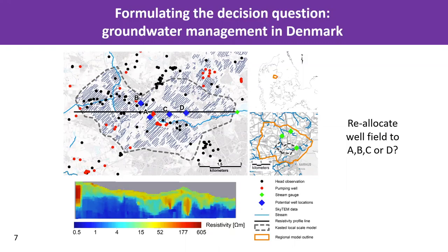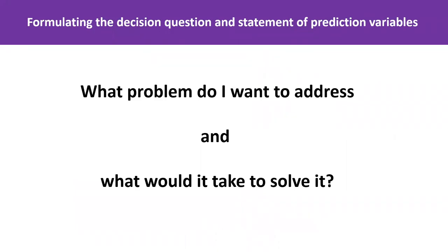We have a number of observations, which is typical in groundwater — pumping wells or observation wells where we measure the groundwater level. At the bottom, you see the SkyTEM resistivity data, which indicates a very heterogeneous subsurface system of buried valleys. You see a significant variation in resistivity in the subsurface, which indicates a significant change in water content and grain size. This is really what we're talking about: what is the problem you want to address and how would you like to solve it?